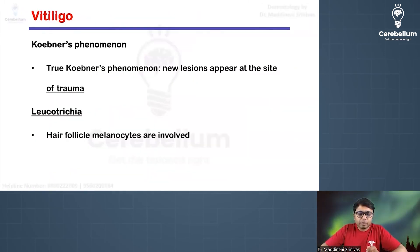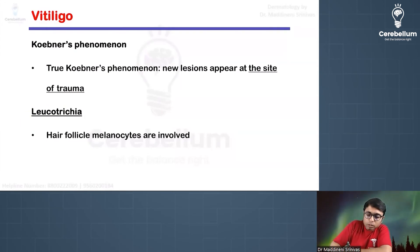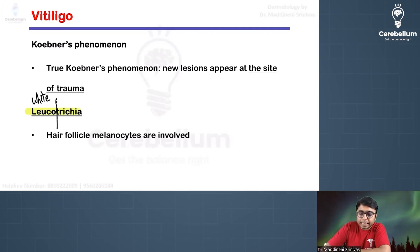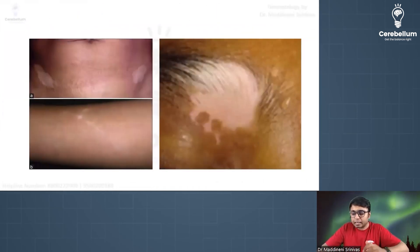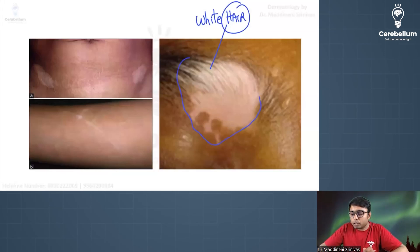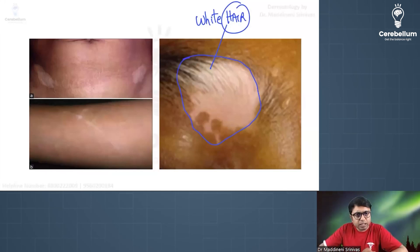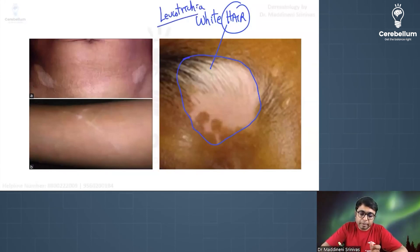In vitiligo, the true Koebner's phenomenon can also be seen. There is also a term called leukotrichia — 'leuko' meaning white and 'trichia' meaning hair — where not only the skin but also the hair becomes white. If hair follicle melanocytes are damaged and destroyed, the hair turns white. In the eyebrow image shown, both the skin and the eyebrow hair are white — this is leukotrichia.